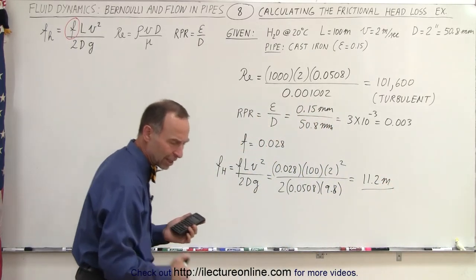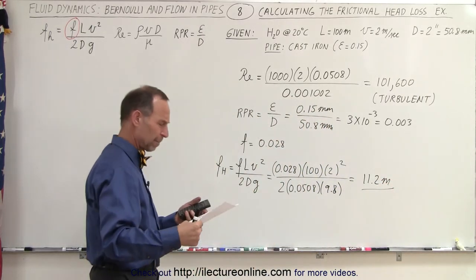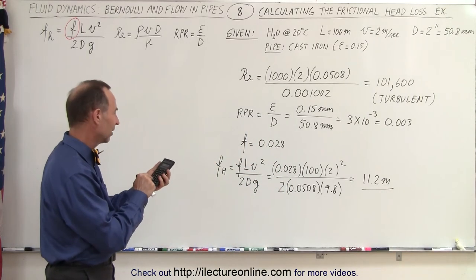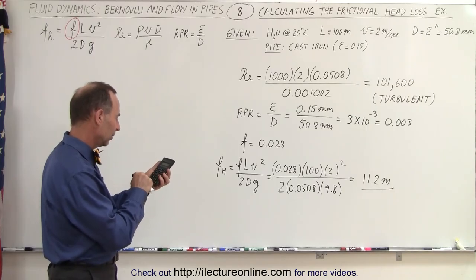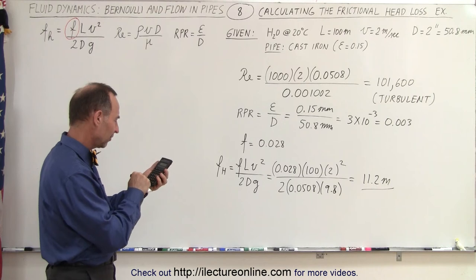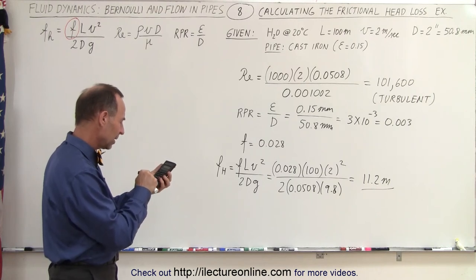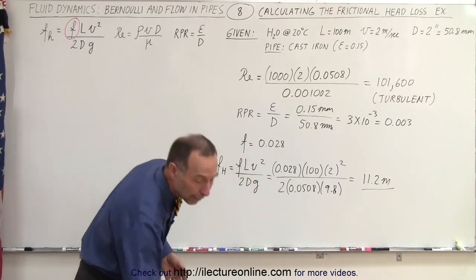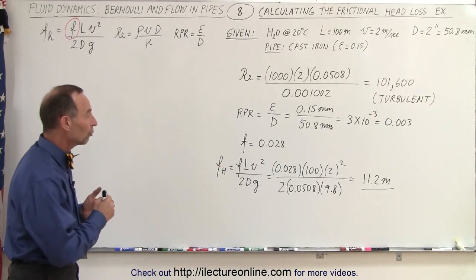Let me do a quick check again on the graph. 0.03, that looks about right. So we have 0.028 times 100 times 2 divided by 0.0508 divided by 9.8 equals 11.2, 11.25. Yep, that's the frictional head loss.